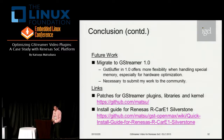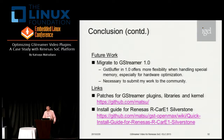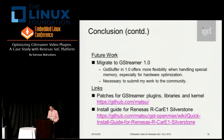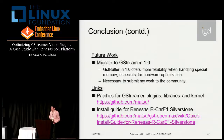Future work: I should migrate to GStreamer version 1. GStreamer version 1 is being redesigned for hardware optimization — especially the buffer management offers more flexibility when handling special memory, such as physically contiguous or combined chunks of memory. Of course, migration would also be necessary to submit my work to the community. I've uploaded my GStreamer code and related libraries to GitHub, so you can see my code if you are interested in the details of the optimization. Thank you for your kind attention.